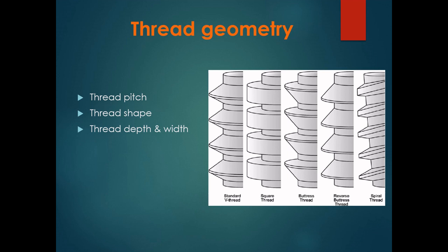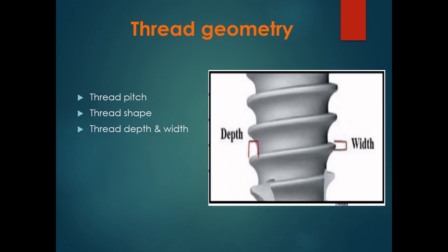Coming to thread depth and width: thread depth is the distance between the major and the minor diameter of the thread. Thread width is the distance between the coronal-most and the apical-most part at the tip of a single thread. Thread depth is found to be more critical for dissipating peak stresses within the bone than thread width. Greater thread width means greater functional surface area if all other factors are equal.